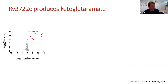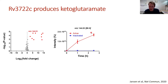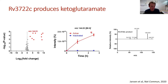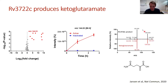A volcano plot of the results shows several features increased after incubation. Manual inspection revealed they were all related to one abundant feature with m/z 144.03 — the others were isotopes, dimers, and fragments. This feature formed in a time-dependent, enzyme-dependent fashion. We took a fragmentation spectrum and, based on accurate mass, hypothesized it could be ketoglutaramate.